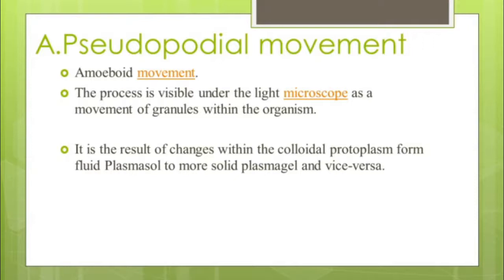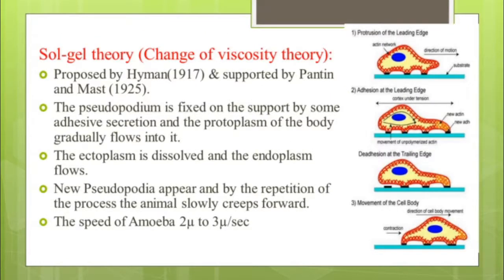Pseudopodial movement, also known as amoeboid movement, is visible under the light microscope as movement of granules within an organism. It is the result of changes within the colloidal protoplasm from fluid plasmasol to more solid plasmagel and vice versa. This was well explained by the sol-gel theory, also known as the change of viscosity theory, proposed by Hyman in 1917 and supported by Pantin and Mast in 1925. The pseudopodia protrude at the leading edge, fix on the support by adhesive secretions, and protoplasm flows into them.